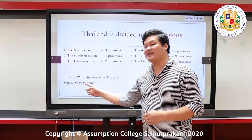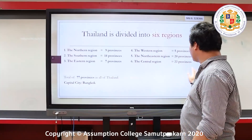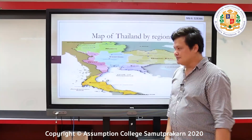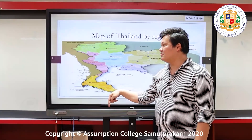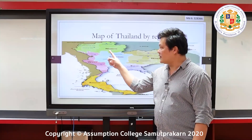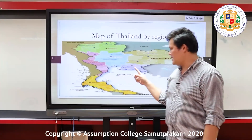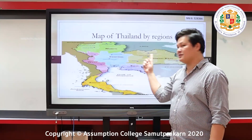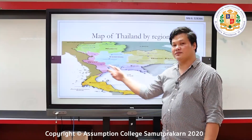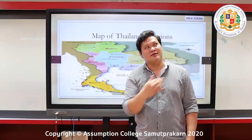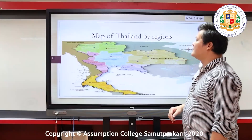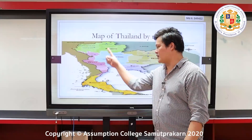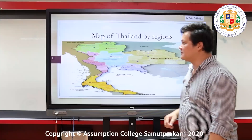Remember, the capital city is Bangkok. If you see the map divided by regions, this is how it looks like — up north, down south: northern region, southern region, eastern region, western region, northeastern region, and the central region. So again, Thailand is divided into how many regions? Six: north, south, east, west, northeast, and central region.